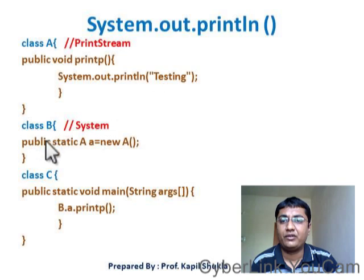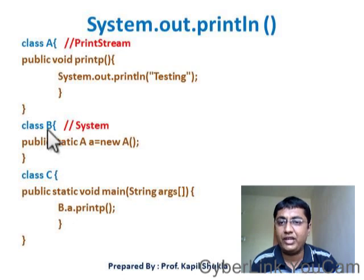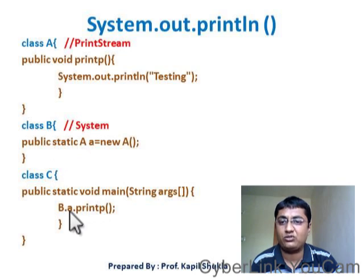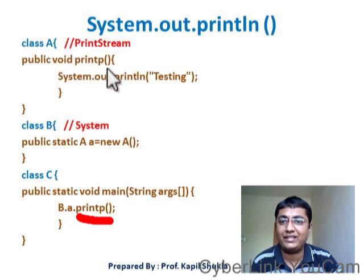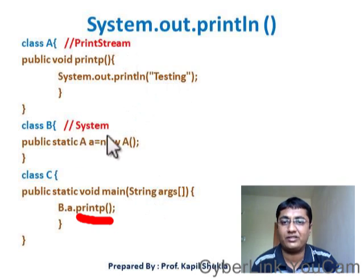In class B, we have created one static field which is actually an object of class A. And in class C, we used the class name B, then we used 'a' — because 'a' is static, we can call it with the class name — and then printP, which is a method in class A. When you run this, it will print 'testing'. So now you can better understand how PrintStream and System are connected.